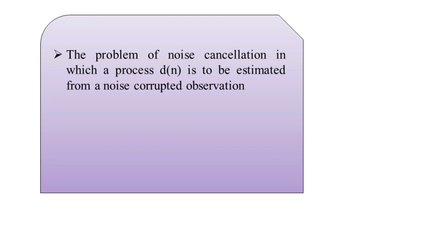We consider the problem of noise cancellation using the usual notations carried from the first video of this chapter. The desired signal, which is a discrete-time random process denoted by d(n), is to be estimated from a noise-corrupted observation — the practical signal denoted by x(n). So x(n) has two parts: the desired signal d(n) and the noise component denoted by v1(n).